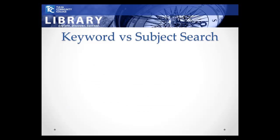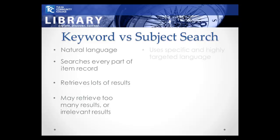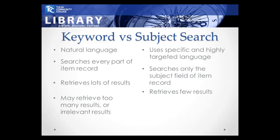Let's review the differences between subject searching and keyword searching. Keyword searching uses natural language and searches every part of the book or item record, such as the author's name, book title, book summaries, and subject terms. Keyword searching also retrieves a large number of results, but it may retrieve too many results, or irrelevant items that weren't what you were hoping to find. In contrast, subject searching uses specific and highly targeted language. It searches only the official subjects your search is filed under in a database or library catalog. Finally, it usually retrieves a smaller number of very relevant items.